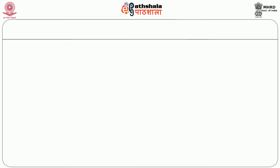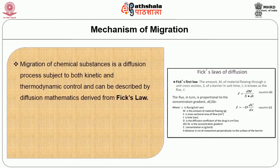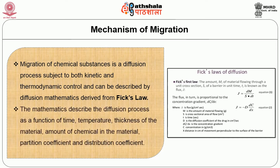Let us start with the mechanism of migration. Migration of chemical substances is a diffusion process subject to both kinetic and thermodynamic control and can be described by diffusion mathematics derived from Fick's laws. The mathematics describes the diffusion process as a function of time, temperature, thickness of the material, amount of chemical in the material, partition coefficient and distribution coefficient.